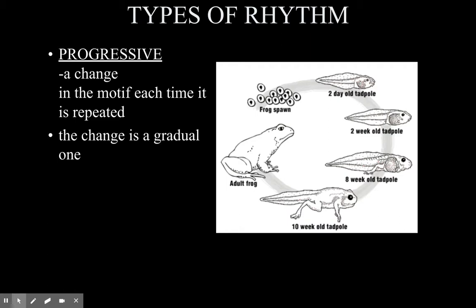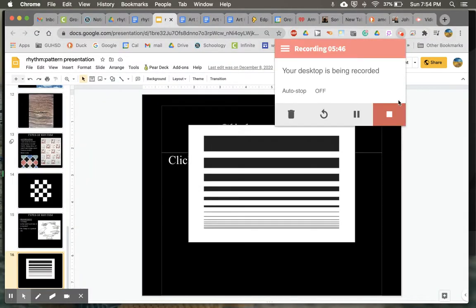Lastly, we have progressive rhythm, where the motif changes each time it is repeated — a gradual change. The life cycle of a frog is an interesting way to show progressive rhythm, because it changes slightly from each step: from egg through the tadpoles to the adult frog. A thick line that slowly changes into a thin line — progressively getting smaller — is a good thing to draw here. Okay, those are your notes. Thanks.